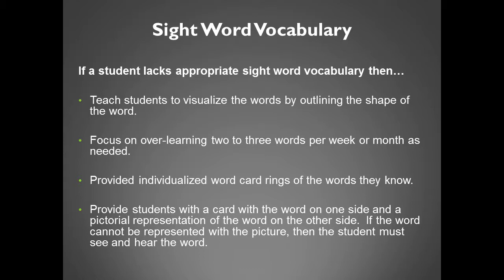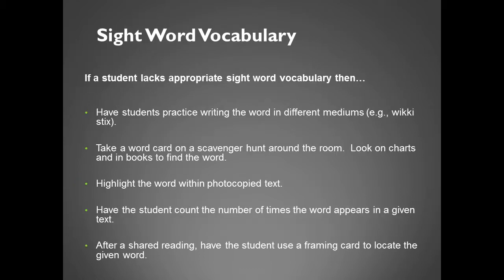If the word cannot be represented with a picture, then the student must see and hear the word. If a student lacks appropriate sight word vocabulary, then have students practice writing the word in different mediums — wiki sticks. Take a word card on a scavenger hunt around the room. Look on charts and in books to find the word. Highlight the word within photocopied text. Have the student count the number of times the word appears in a given text.